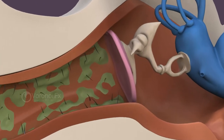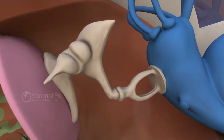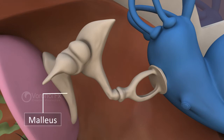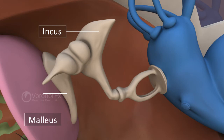The middle ear begins with the eardrum at the end of the ear canal. The middle ear contains three tiny bones called the ossicles. The malleus is the small, hammer-shaped bone in the middle ear; sound from the malleus is transferred to the incus. The incus is shaped like an anvil. The stapes is the smallest bone in the human body and is shaped like a stirrup.